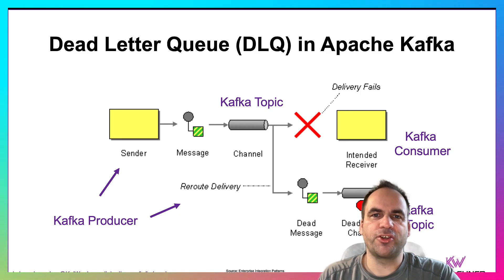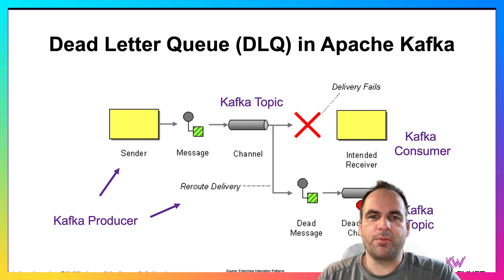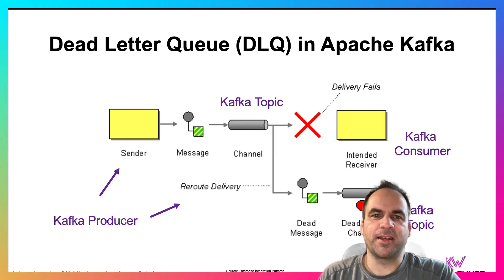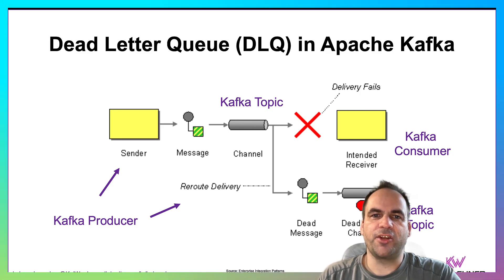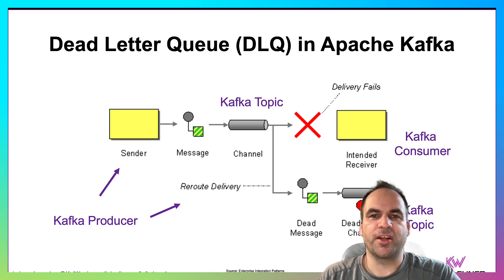Now mapping this to Apache Kafka, the data streaming platform, it's actually pretty straightforward. The sender in this case is a Kafka producer, which can be any kind of Kafka client like a Java application, Python, or JavaScript, or you can use a connector with a REST HTTP call or maybe a connector from another system like an MQ or a database with change data capture.